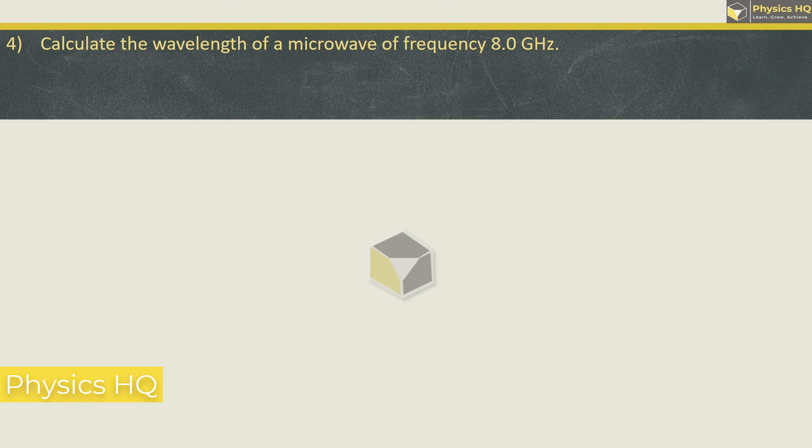Next, calculate the wavelength of a microwave of frequency 8 gigahertz. So wavelength is once again V by N. Speed is 3 into 10 raise to 8. Frequency is 8 gigahertz. Giga is 10 raise to 9. So this is 3 upon 8 into 10 raise to minus 1. So 30 by 8 into 10 raise to minus 2. 30 by 8 is 3.75 into 10 raise to minus 2 meter. And you can write it as 3.75 centimeter.